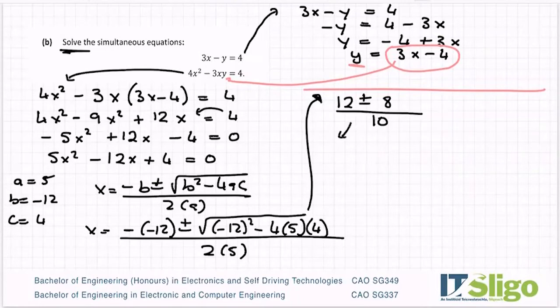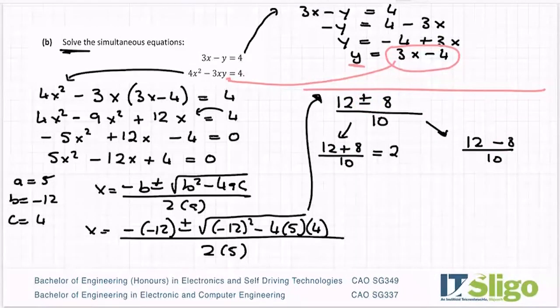So then you split them into the two answers. 12 plus 8 over 10 is 20 over 10, which is 2. And your other answer 12 minus 8 over 10, so you're splitting it here plus and minus. And that's 2 fifths. So they are your two answers for x.